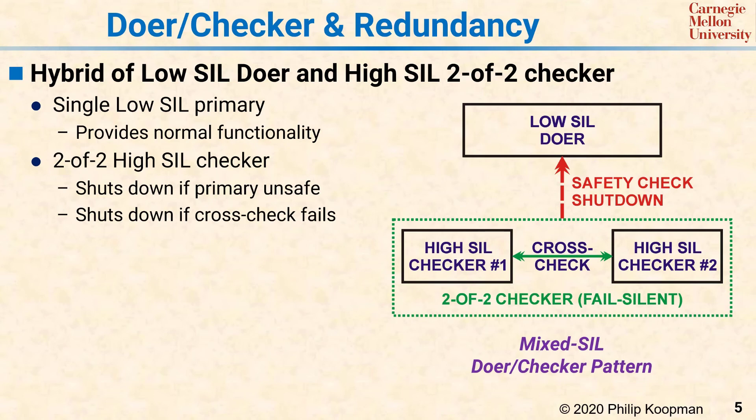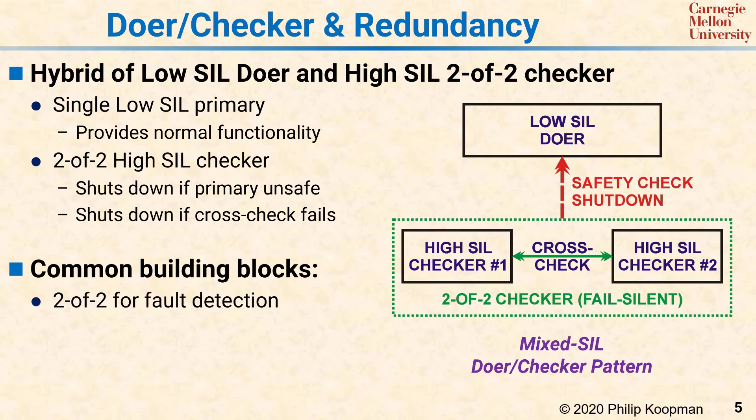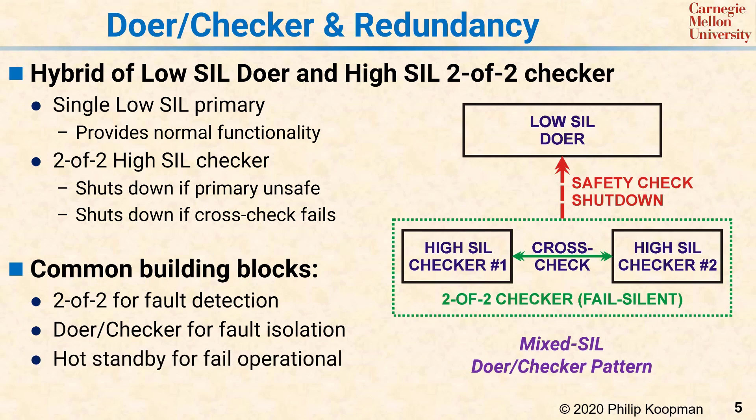These are just examples of how various patterns can be used. Any particular system should use the right combination of patterns. The typical mechanisms that are combined are two-of-two pairs for fault detection, a doer-checker strategy for isolating high and low SIL software, and using hot standby to improve availability after a fault occurs.